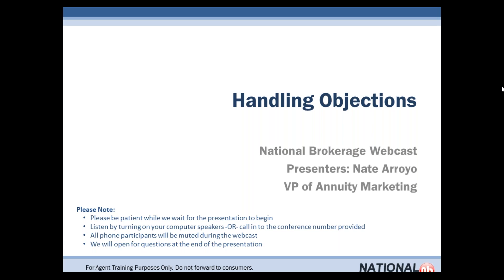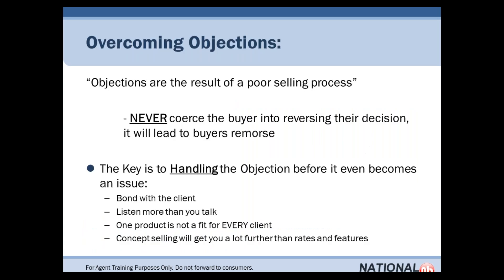Today I want to talk about handling objections — handling objections in the annuity sales process. I'm going to go through what that process looks like and then give you, towards the end, some of our presentations and materials that our agents use in annuity sales, to show how to overcome the objection before it even becomes an objection. I really want to talk about handling objections in the sales process, and this is also going to help you with your life insurance sales as well.